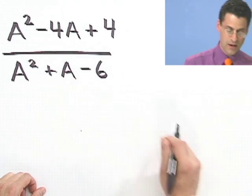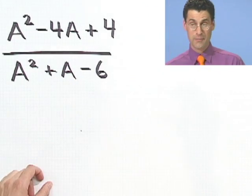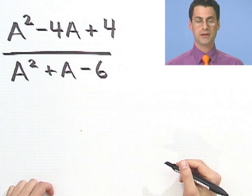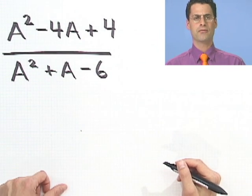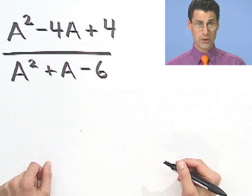OK. So here's the problem. a squared minus 4a plus 4, all divided by a squared plus a minus 6. Factor away and cancel at will.